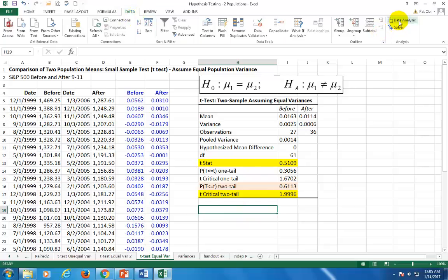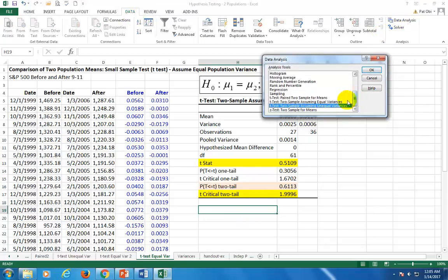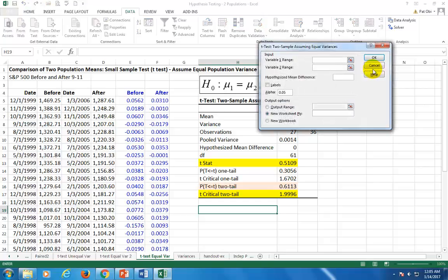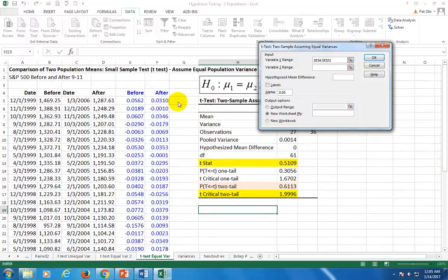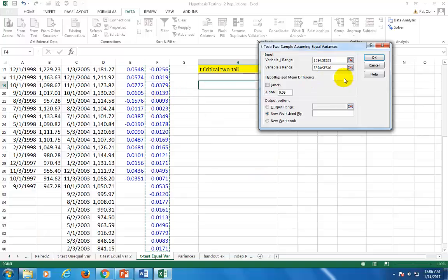To do this, I go to Data Analysis. This time, I'm going to choose t-test assuming equal variances. For variable one, I'm going to go with before. It doesn't really matter which one I click first. For variable two, go back up here and click on after. To catch it all in one fell swoop, when you click on after, hold the shift key while hitting the end key and then arrow down. It catches it right away.